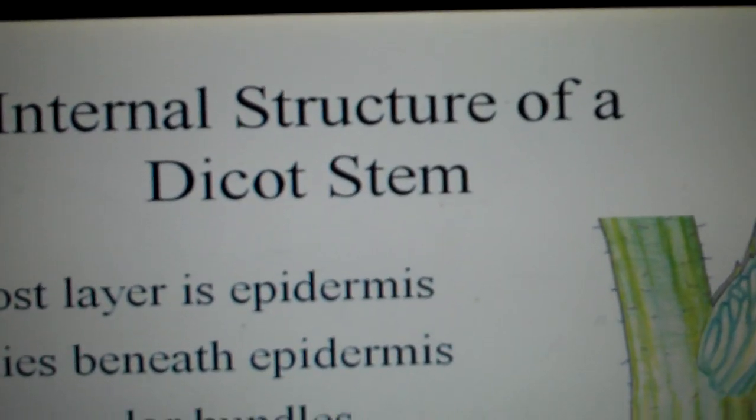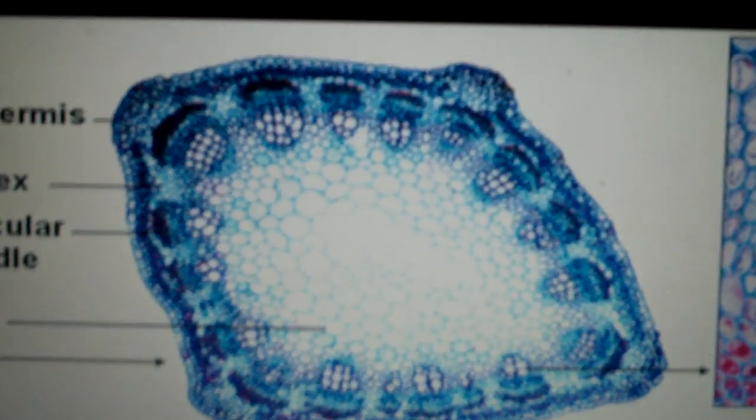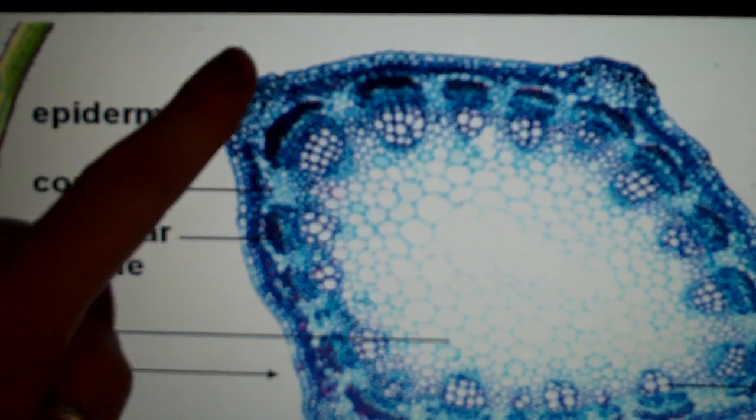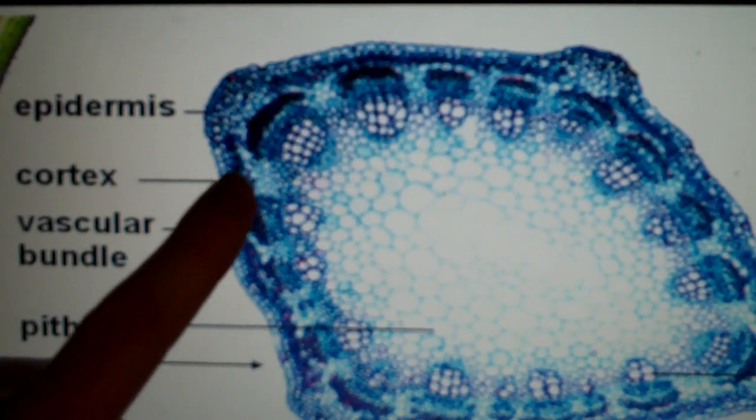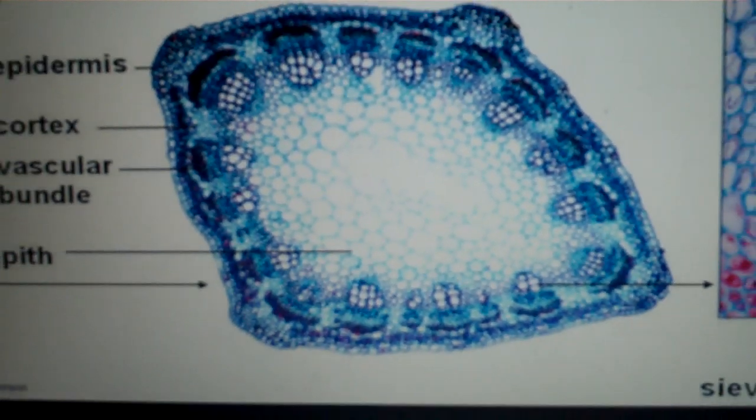This is a dicot stem. Looking here, this is a real cross-section of a plant. We have our epidermis on the outside, then the cortex, our vascular bundle with the xylem and the phloem, and then the pith on the inside.